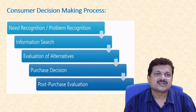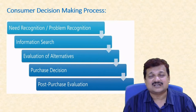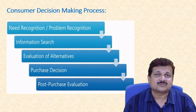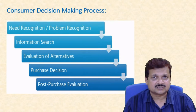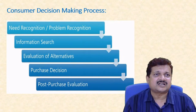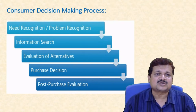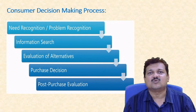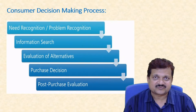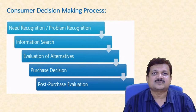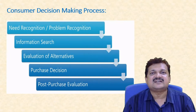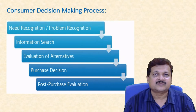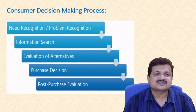In evaluation of alternatives, you evaluate the brands available in the market based on attributes — which are benefits from the customer's perspective and attributes from the seller's perspective. You evaluate which brand gives more benefit. This differs from brand to brand and person to person, since perceived benefit differs by customer. You select the brand that appears superior based on your requirements.